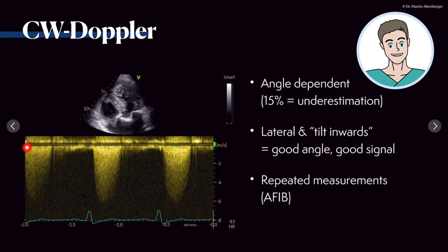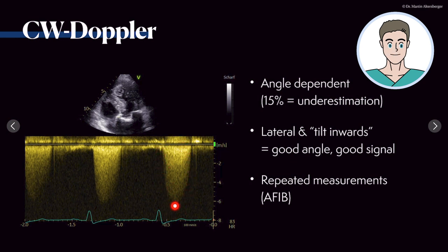In this case we have sinus rhythm. You can see that one signal is a bit weaker compared to the other two. The most optimal signal is probably the third one — it's very dense, and this is what you want in an optimal measurement of continuous wave Doppler of the aortic valve.